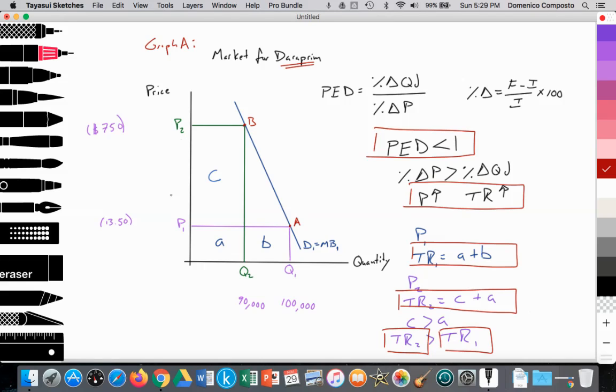If the firm was to lower price from P2 to P1, quantity demanded would increase, but they would experience a decrease in total revenue. So if we were to analyze that, the firm pricing at P2, quantity demanded at Q2, at point B, total revenue equal to area C plus A.